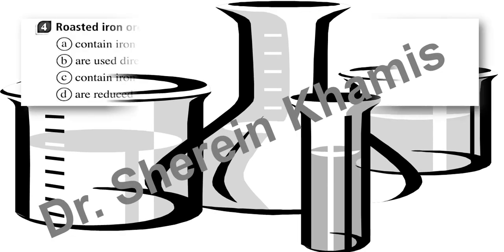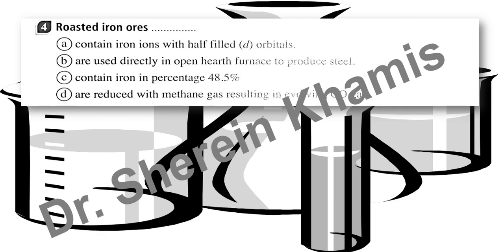Question number 4. We have roasted iron ores — what is the main property for them? The answer is that all iron ions, whatever their state, contain a half-filled d-orbital. This is the main characteristic of iron in all its cases.